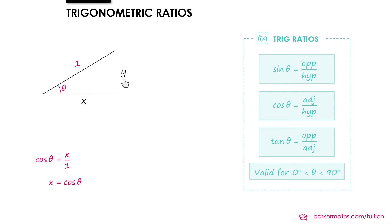We can do a similar thing for Y. Y is the opposite in this triangle and 1 is the hypotenuse. Opposite and hypotenuse tells us to use sine. So sin θ is Y over 1, which simplifies to Y equals sin θ.